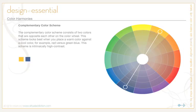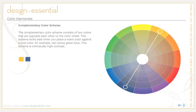The complementary color scheme is made of two colors opposite each other on the color wheel. It looks best when you put a warm color against a cool color — for example, a red versus a blue-green, or an orange versus a navy blue. The complementary scheme is intrinsically high contrast. It's important to choose a dominant color and use its complementary color for accents. Pros are that it offers stronger contrast than any other scheme and draws maximum attention. Cons are that it's harder to balance, especially when desaturated warm colors are used.